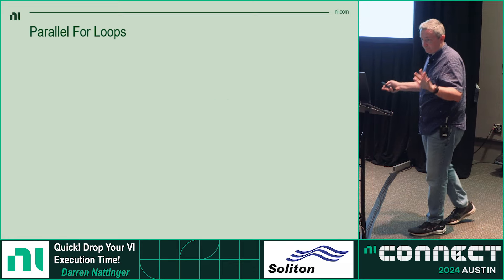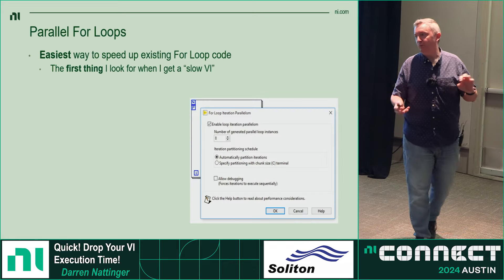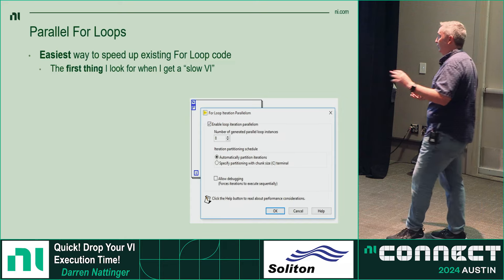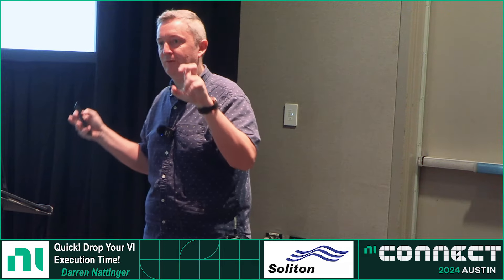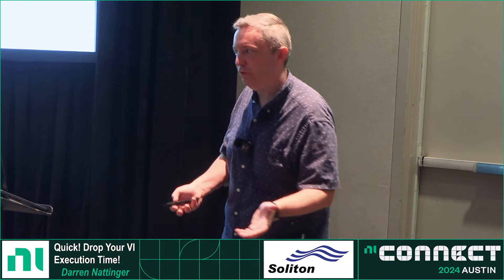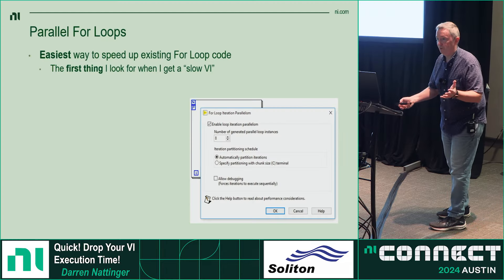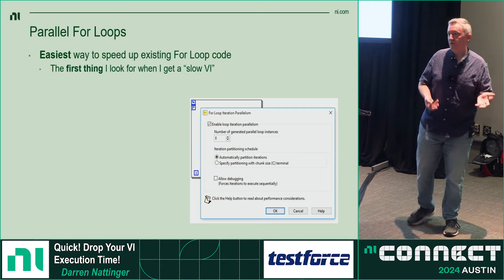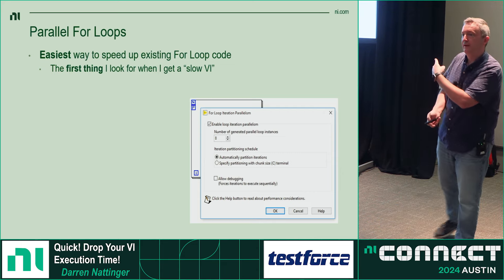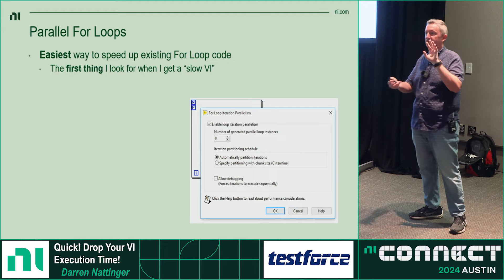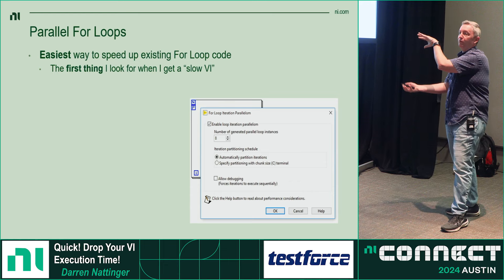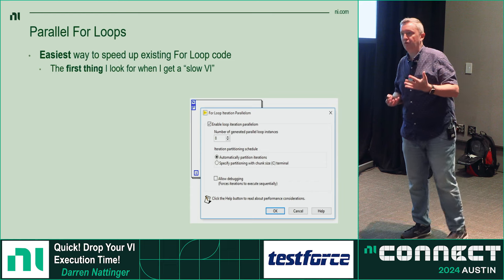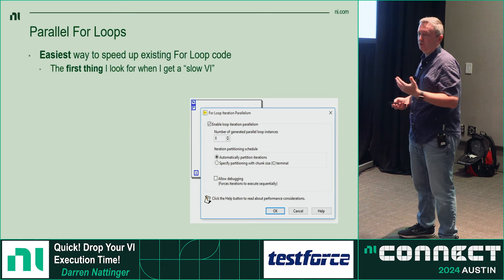Parallel for loops are the number one easiest way to speed up slow code, assuming there is a for loop in your slow code. It's the first thing I look for when I get a slow VI. You right-click on the for loop's border, choose 'Configure Iteration Parallelism,' and this tells LabVIEW to split the for loop's iterations into groups that run in parallel instead of serially. When configured, you get a little P in the corner of your for loop.